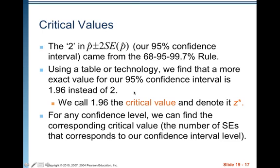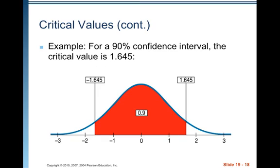For 90% and 99% confidence levels, you'll have different z* values. For any confidence level, we can find the corresponding critical value — the number of standard errors that corresponds to that confidence level. Table T in the back of the book shows z* values along the bottom and confidence levels across the top. For example, for a 90% confidence interval, the critical value is 1.645, meaning we go 1.645 standard errors in both directions from our estimate.